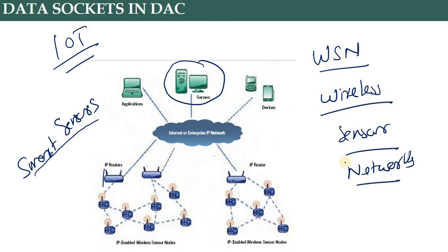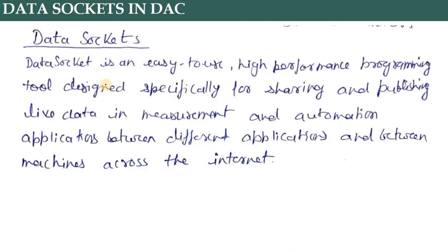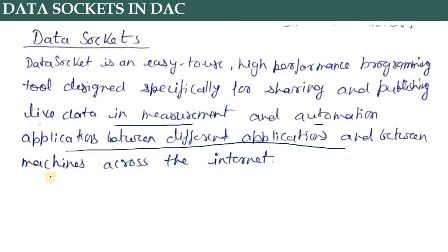WSN or IoT — what we need to connect these kinds of things are IP routers or, simply, data sockets. A data socket is an easy-to-use, high-performance programming tool designed specifically for sharing and publishing live data in measurement and automation applications between different applications and between machines across the internet.